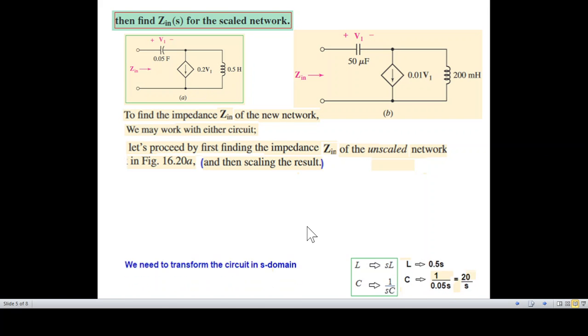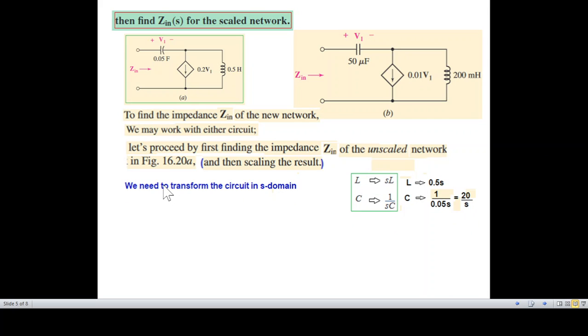We need to transform the circuit into s-domain. And we know the formula from time domain to s-domain, so we'll convert this. L will be 0.5s, the formula is s times L. But there is a mistake here, it will be 0.05s. Actually this is okay, L is 0.5, so 0.5s. And capacitor is 1 over sC, so 1 over 0.05s, which can also be written as 20 over s.